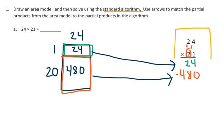And if I add those partial products together, I have an answer of 504. So my answer, and I can put in my block up here, is 504.